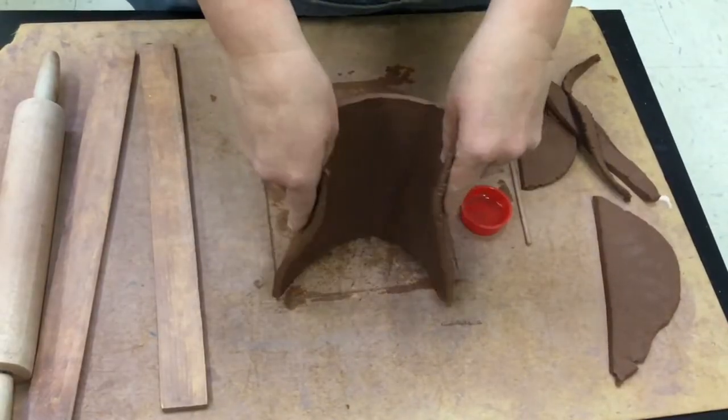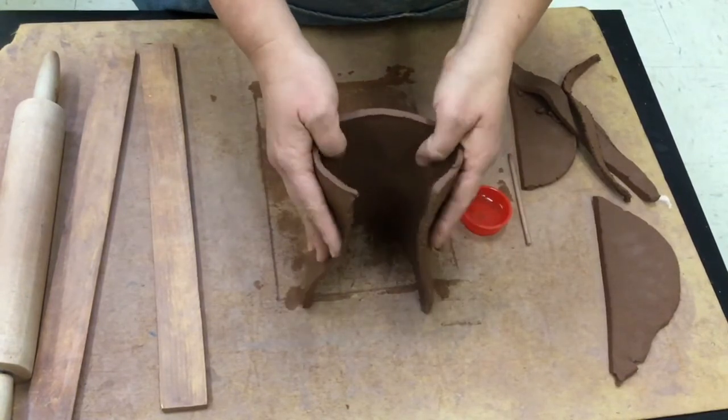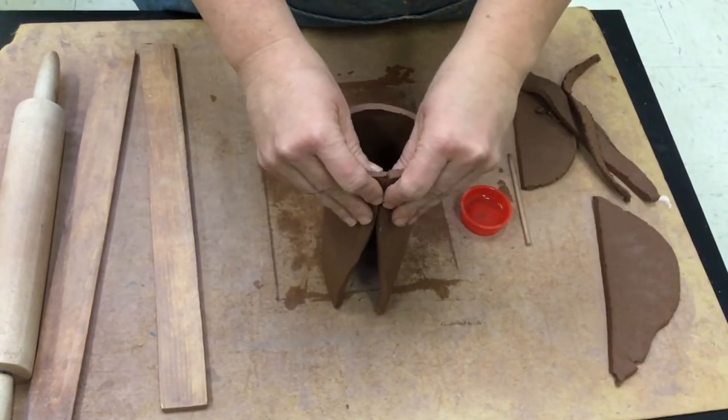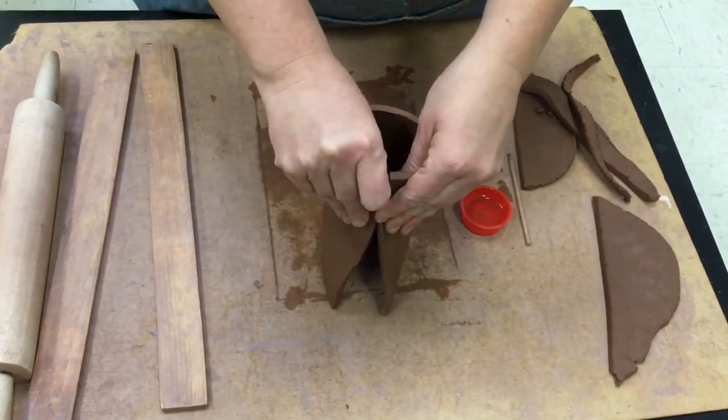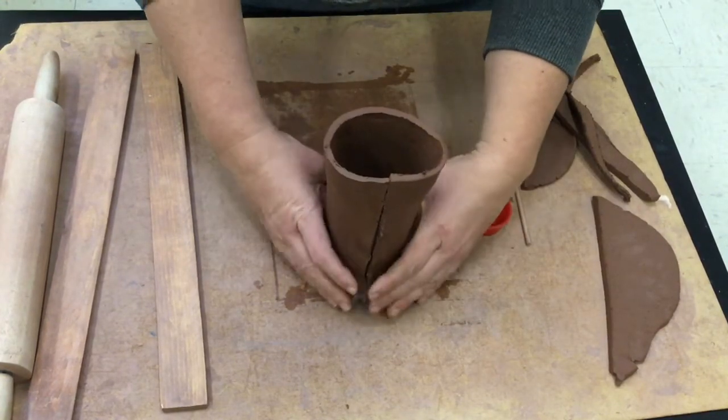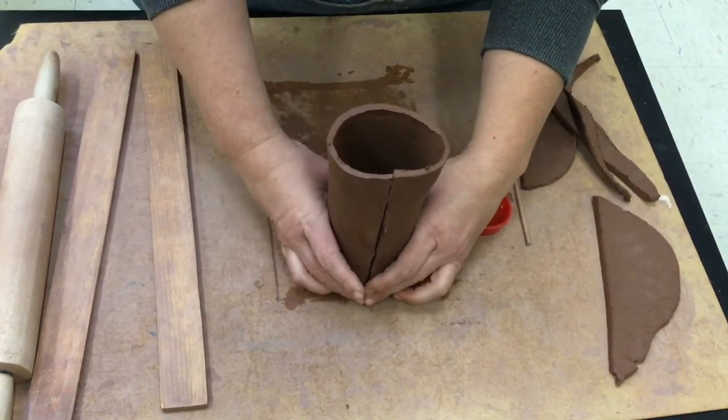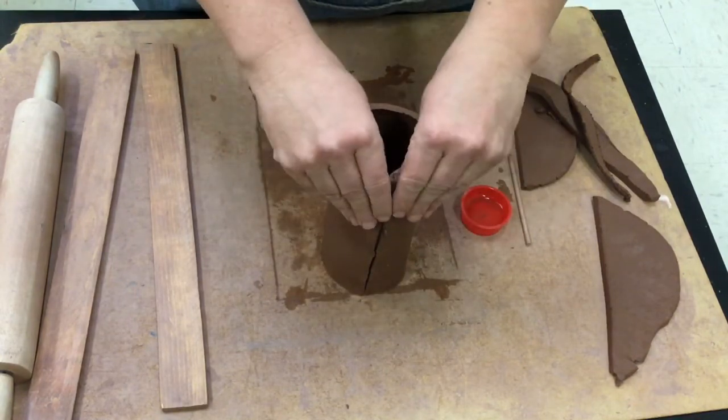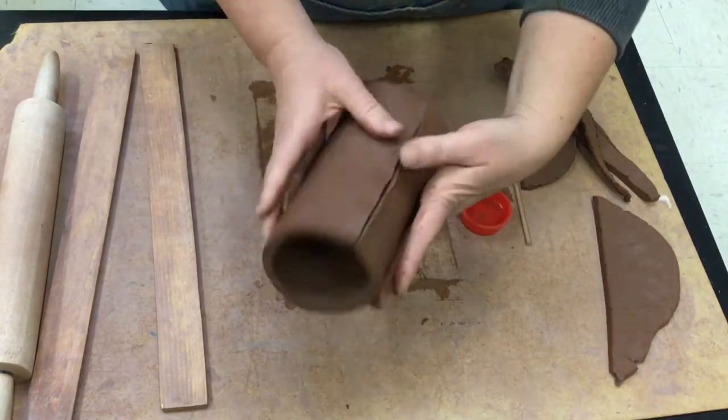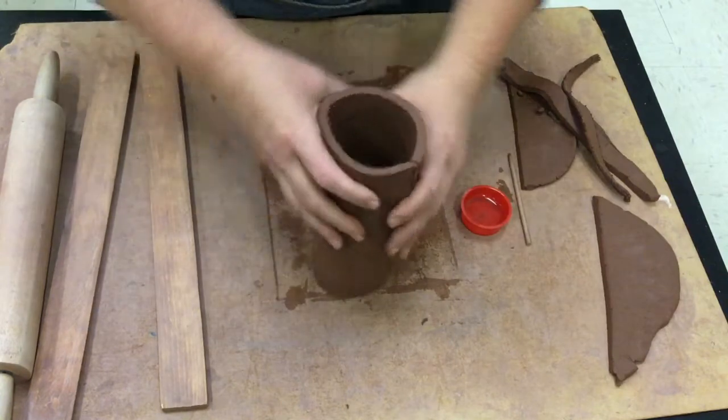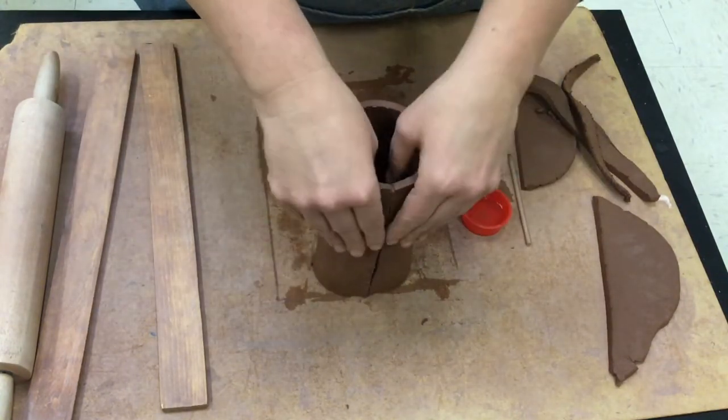All right so I'm going to take my ends and I'm going to lift them up and I'm going to touch them together. Once these are sort of stuck I can use my fingers to sort of put the other parts where they belong. I can also flip this over so that I can reach this other side.